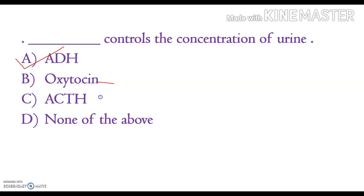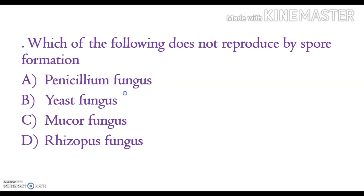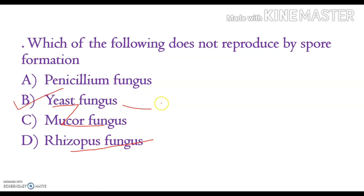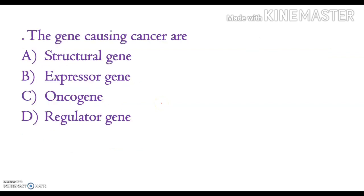The next question: which of the following does not reproduce by spore formation? The options are Penicillium fungus, yeast fungus, Mucor fungus, and Rhizopus fungus. The correct answer is option B, yeast fungus, because yeast reproduces through budding.